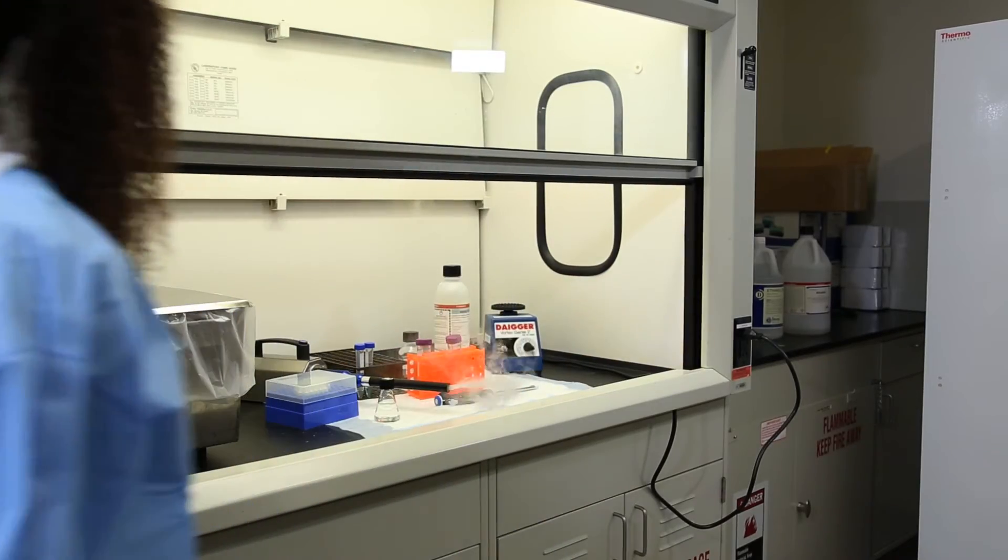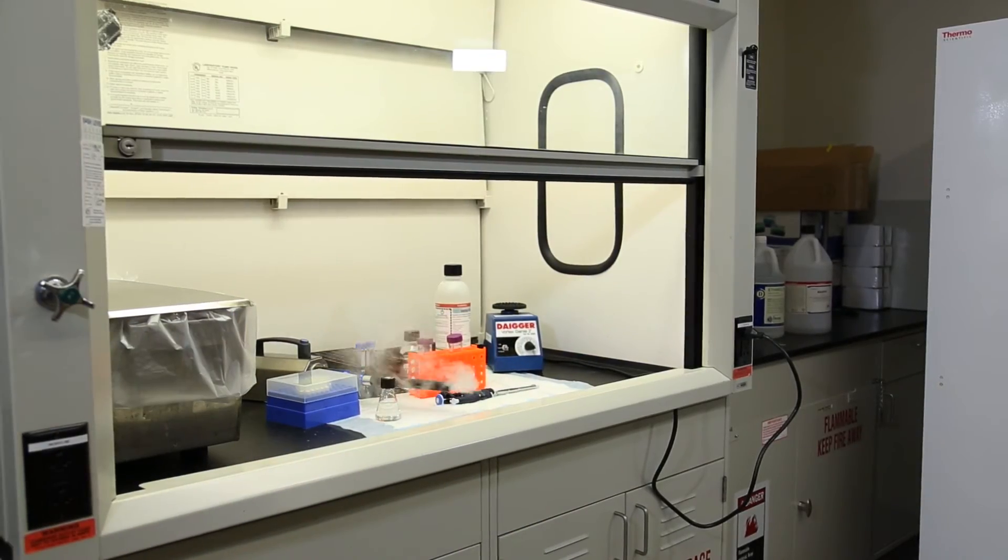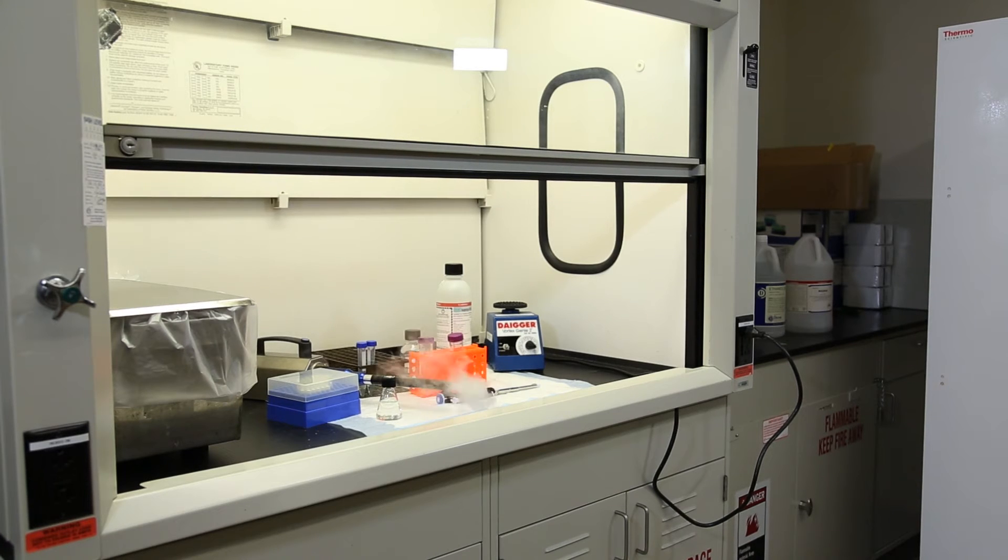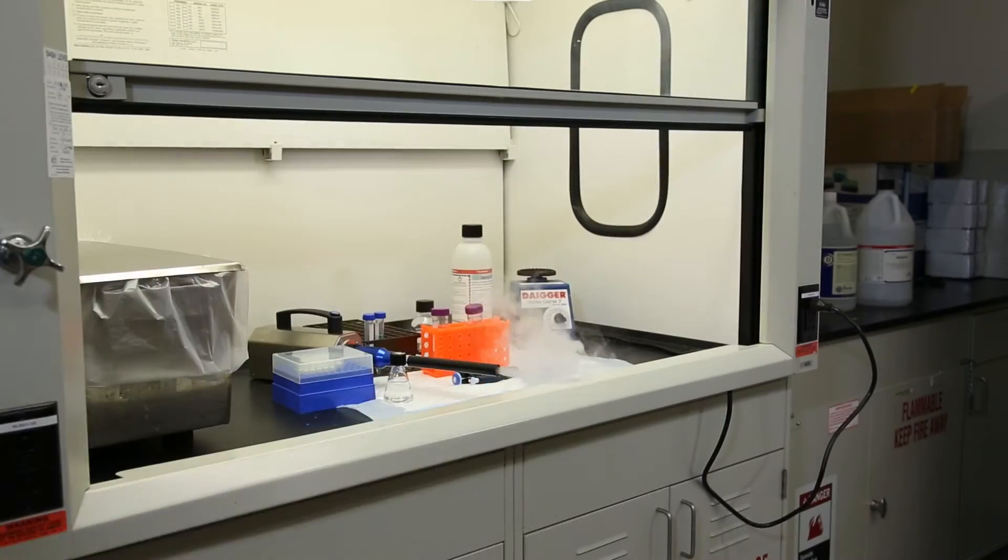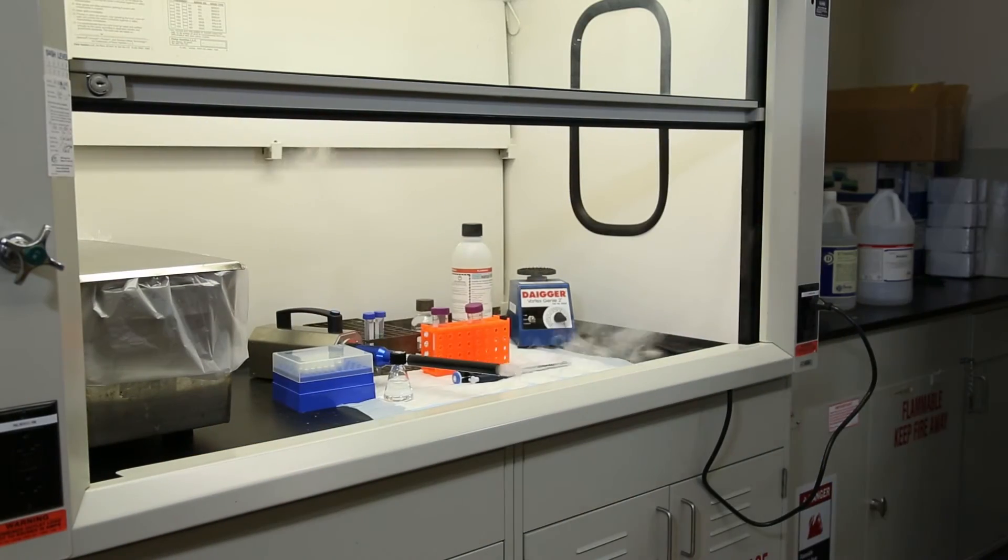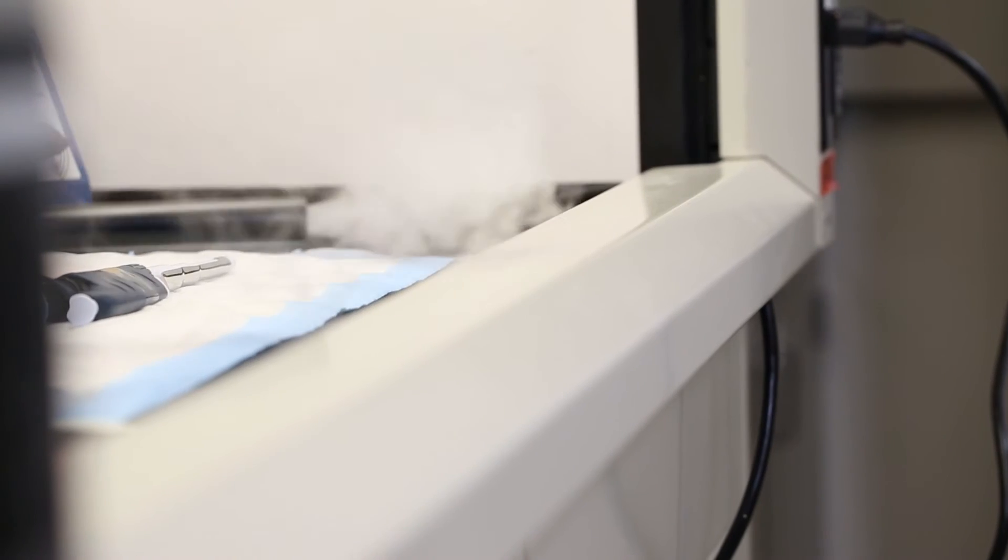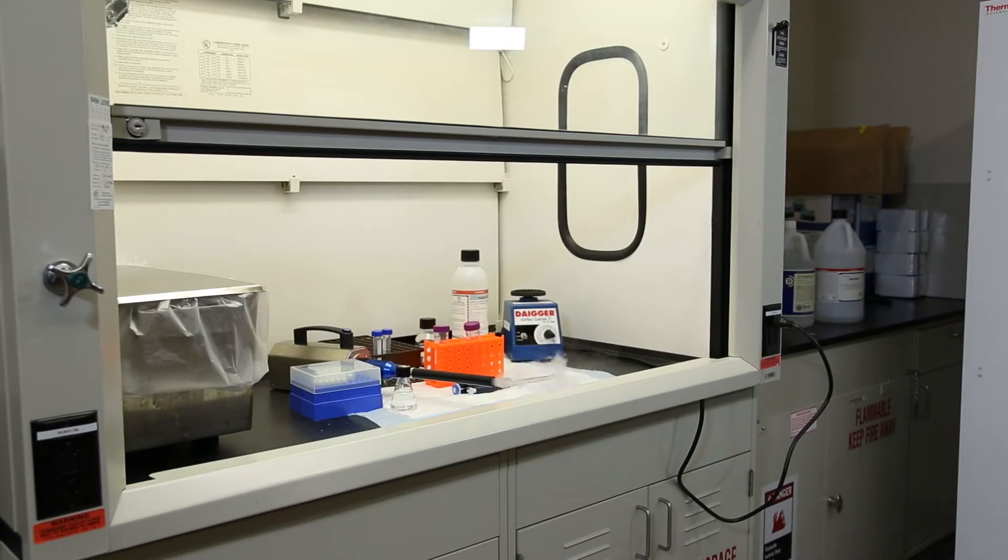Wakes or vortices form behind a person who is walking, and the velocities in these vortices exceed 250 feet per minute. When a person walks in front of an open fume hood, the vortices can overcome the fume hood face velocity and pull contaminants out of the fume hood, into the vortex, and into the laboratory.